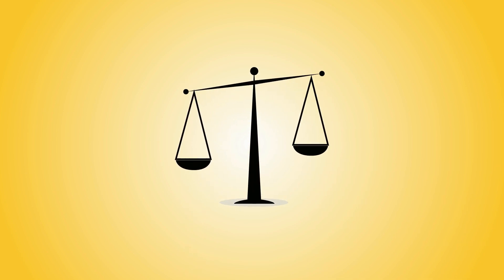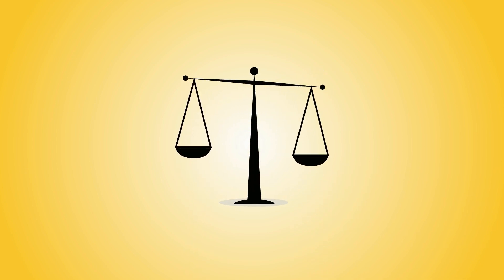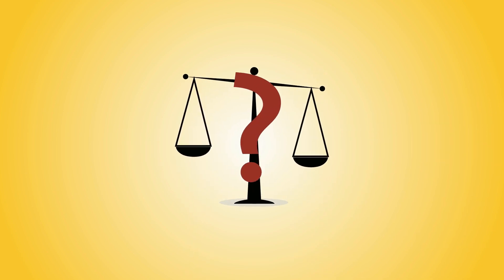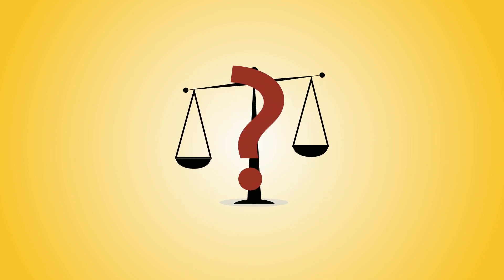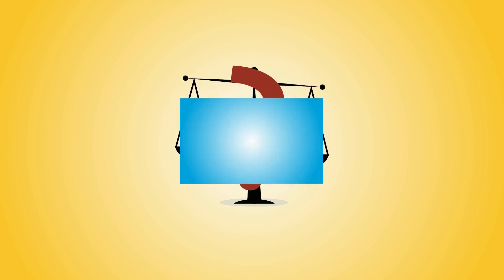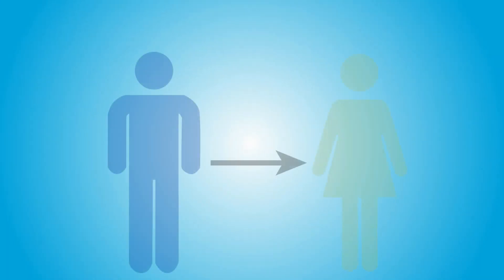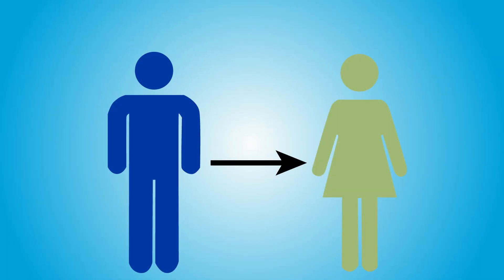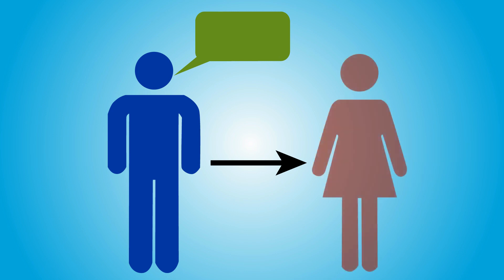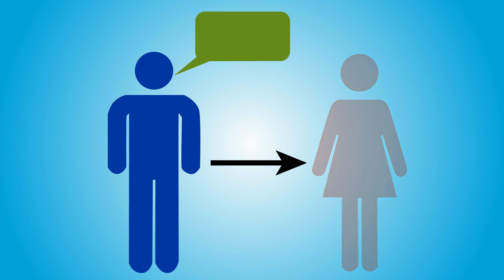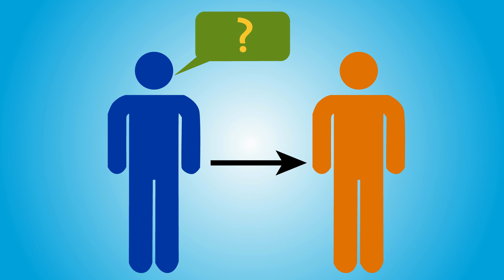Remaining completely objective, however, is easier said than done. So what can you do to combat these potential biases? First, ask yourself whether any critical comment you make would change if the author were a different person. If the answer is yes, then you should carefully consider what motivated you to make that comment in the first place.